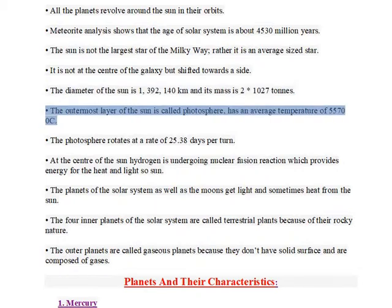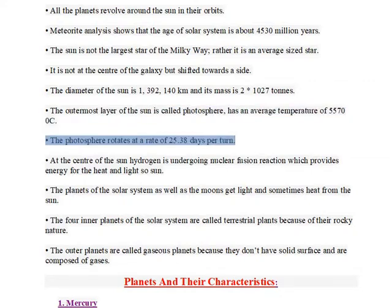The outermost layer of the Sun is called the photosphere, which has an average temperature of 5,570°C. The photosphere rotates at a rate of 25.38 days per turn.